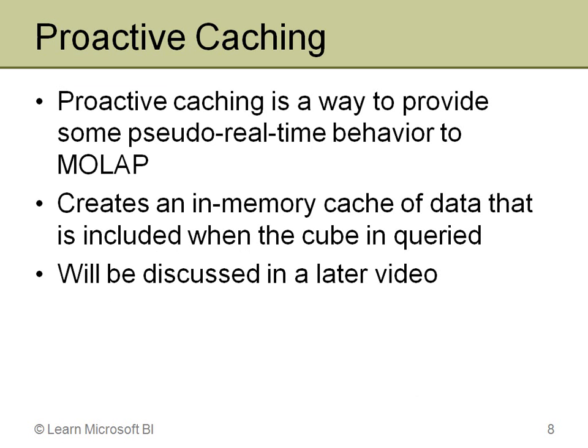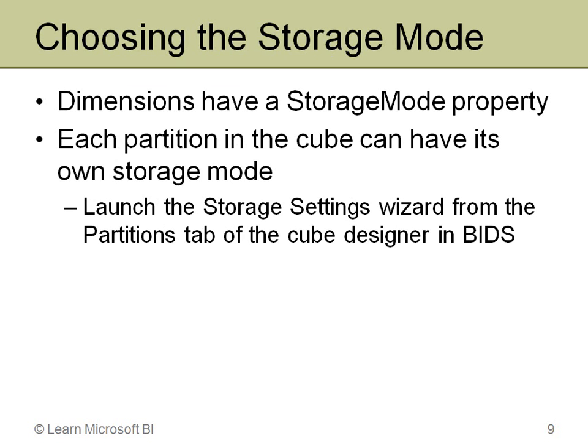There is a feature in Analysis Services 2005 and 2008 called proactive caching. This gives you some sort of real-time behavior in MOLAP. You can set it up to monitor tables in the relational data warehouse, and when those change, rather than reprocessing the entire cube it processes an in-memory cache. When a new fact record comes in, it goes into the cache, and the next query gets data from the cube plus the cached data. A full video on proactive caching will cover the caveats.